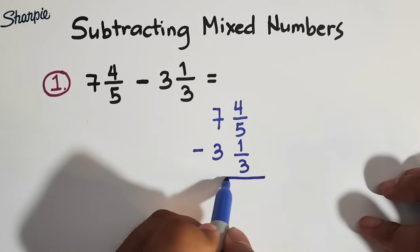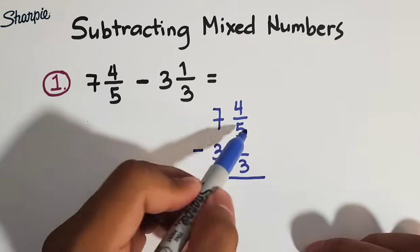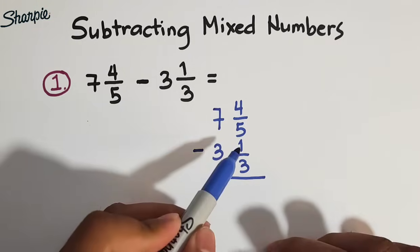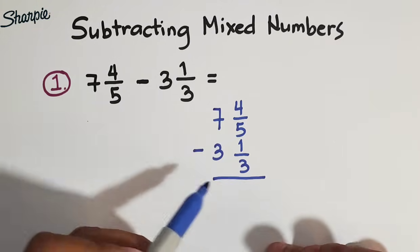So as you can see, hindi pa tayo pwede na mag-subtract because our denominators in the given fractions 4 over 5 and 1 third, meron pa silang different denominators. So we need to figure out their least common denominator. And to find that LCD, we need to find the least common multiple of 5 and 3.